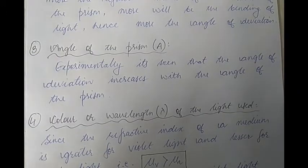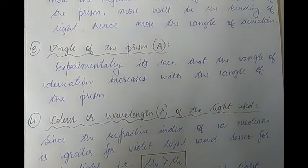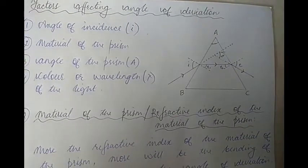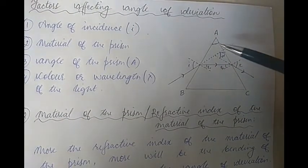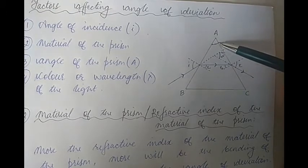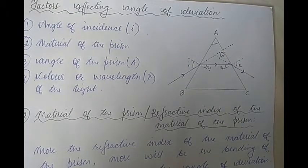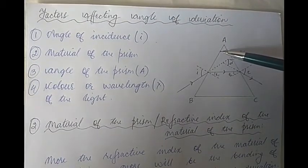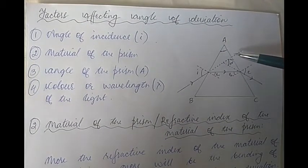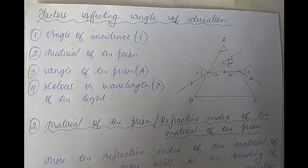The third factor is the angle of the prism. Experimentally, it has been seen that more is the angle of the prism, more will be the angle of deviation. That is, greater the value of the angle of the prism, more will be the deviation produced.